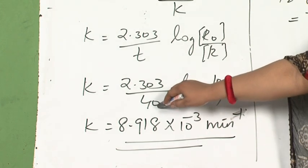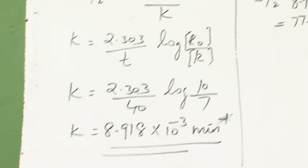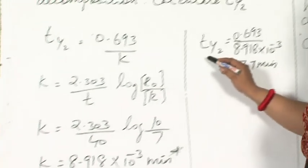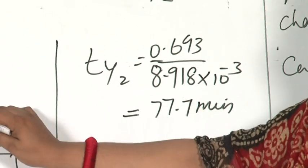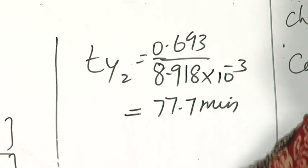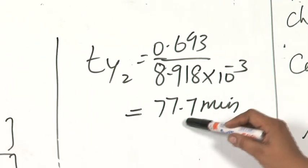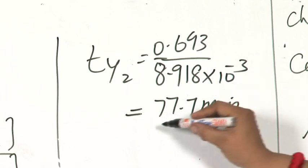Here, since the time is given in minutes, it will be minute inverse. The second part of the question asks for t half. The relationship is 0.693 upon k. Substitute the k value you got here and you will get the value of t half as 77.7 minutes.